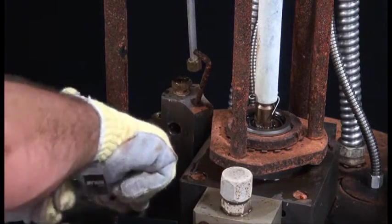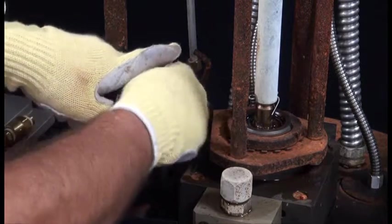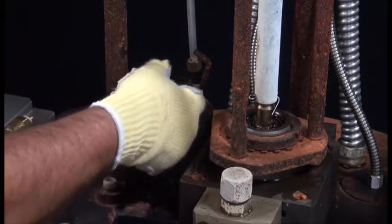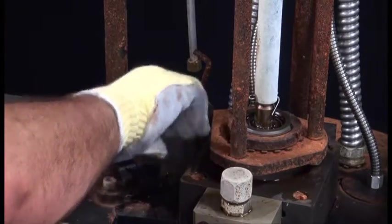There are two 6mm socket head cap screws fastening the purge block to the platen cover. Remove these two screws using a 5mm hex wrench.